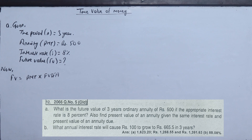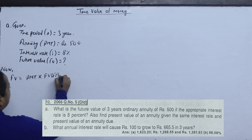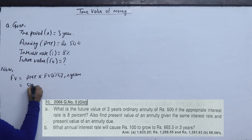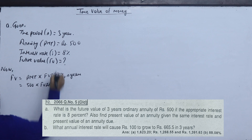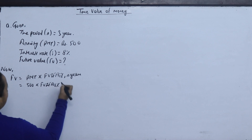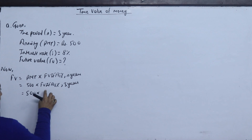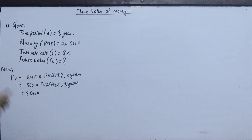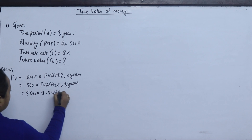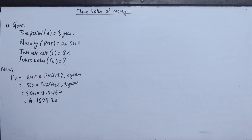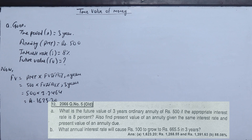FVIFA is looked up from the table at I% for N years. The payment each year is 500. FVIFA at 8% for 3 years is 3.2464. Therefore, the future value is 500 × 3.2464 = 1,623.20. This is the future value for the ordinary annuity.